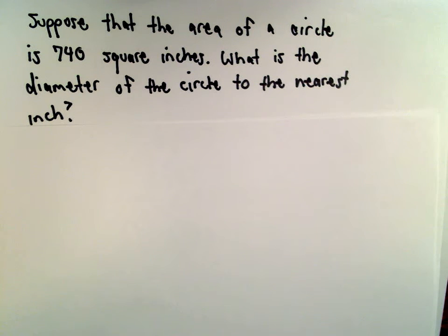Okay, suppose that the area of a circle is 740 square inches. We want to know what's the diameter of the circle to the nearest inch?